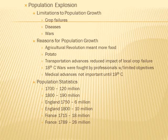There was a population explosion. Earlier the limitations on population growth were crop failures, diseases, and wars. Reasons for population growth included the agricultural revolution meaning more food, the introduction of the potato — a super plant that grows where little else does and is full of vitamins — transportation advances that reduced the impact of local crop failures, and 18th century wars fought by professionals with limited objectives that didn't cause as much damage. Population statistics: in 1700, 120 million people in Europe; in 1800, 190 million. England went from 6 million in 1750 to 10 million in 1800. France went from 18 million in 1715 to 26 million in 1789.